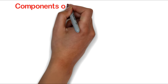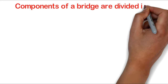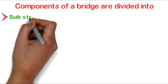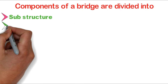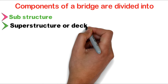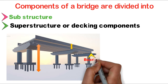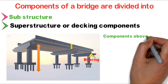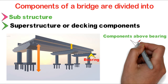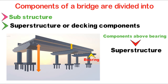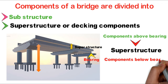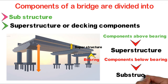The components of a bridge are broadly divided into substructure components and superstructure or decking components. Components above the bearing of a bridge are called superstructure, and components below the bearing are called substructure.